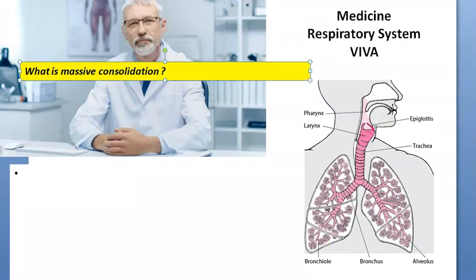What is massive consolidation? Sir, massive consolidation means it is involving more than one lobe — then it is called as massive consolidation.